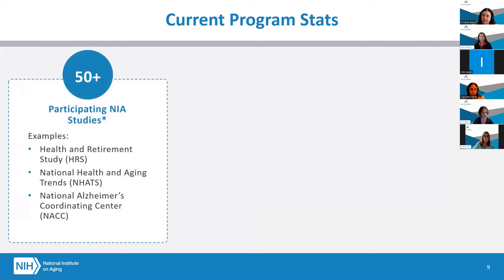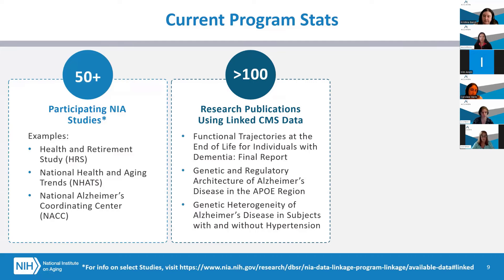Today, the NIA Linkage Program has more than 50 participating NIA studies, such as the Health and Retirement Study, known as HRS, the National Health and Aging Trends, known as NHATS, and the National Alzheimer's Coordinating Center, or NACC. There have been over 100 research publications from researchers who have conducted secondary research on the CMS-linked NIA studies. Examples include functional trajectories at the end of life for individuals with dementia, genetic and regulatory architecture of Alzheimer's disease in the APOE region, and genetic heterogeneity of Alzheimer's disease in subjects with and without hypertension.